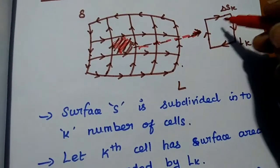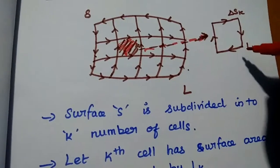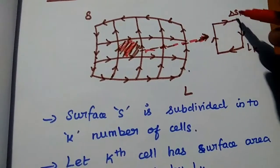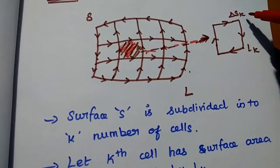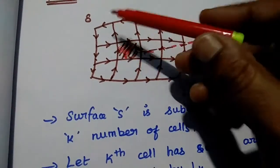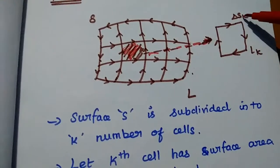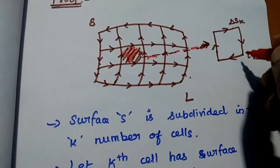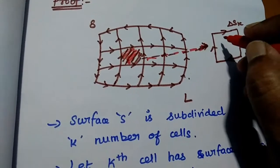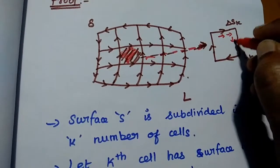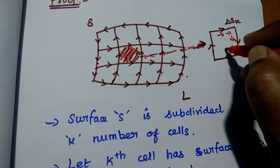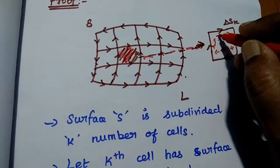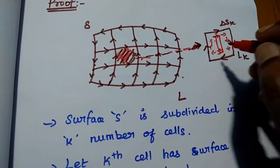We consider the Kth loop — taking this one particular cell outside. The length of this closed loop is LK, which is the length for the Kth loop, and its surface area is del SK. It is a smaller surface compared to the overall surface.